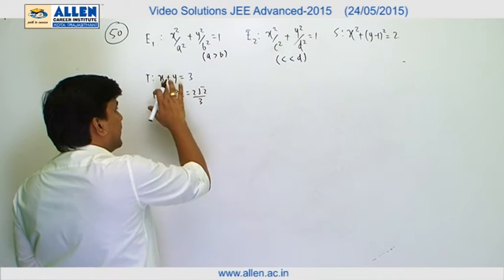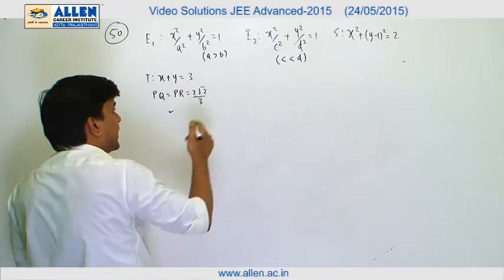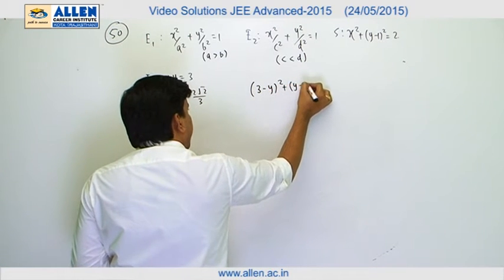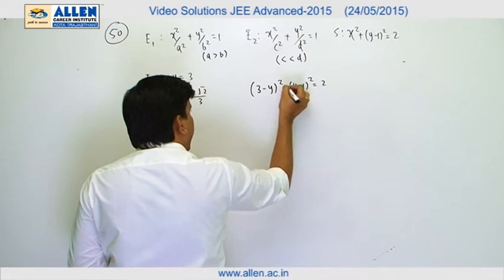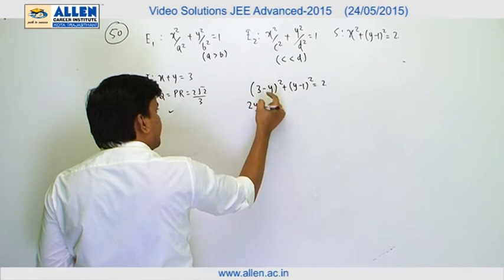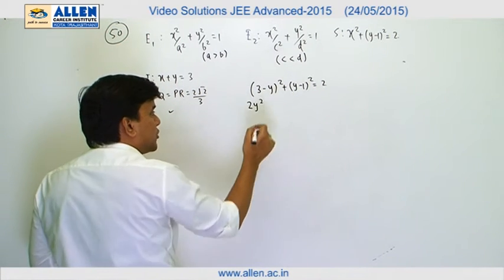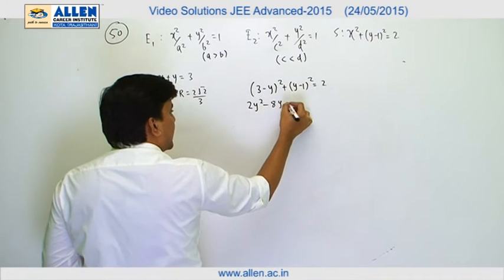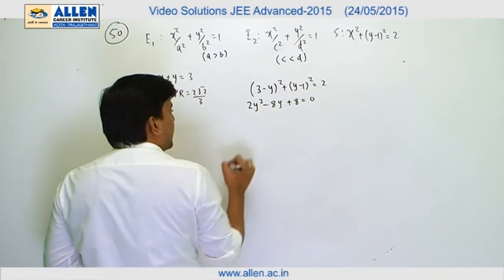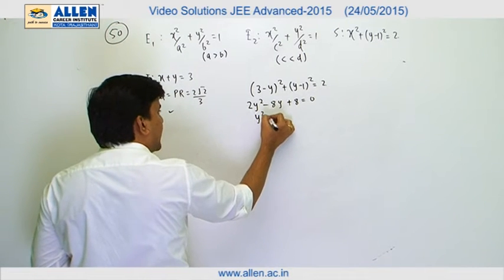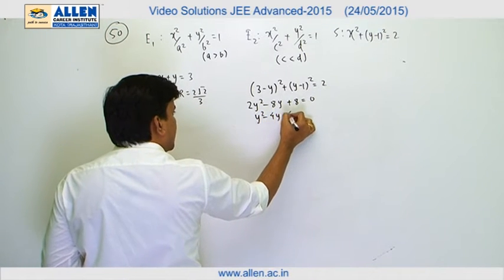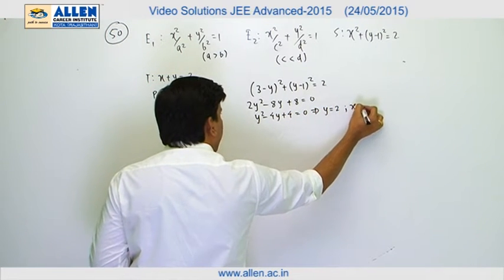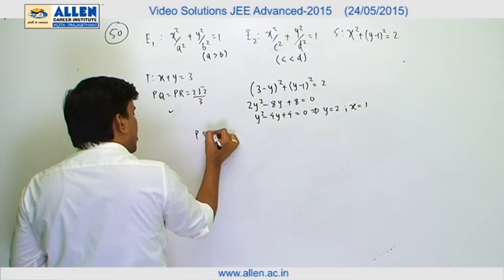To find P, we eliminate x. We get (3 minus y) whole square plus (y minus 1) whole square equals 2. Expanding: 2y² minus 8y plus 10 minus 2 equals 0, giving 2y² minus 8y plus 8 equals 0, or y² minus 4y plus 4 equals 0. So y equals 2 and correspondingly x equals 1. The point P has coordinates (1, 2).